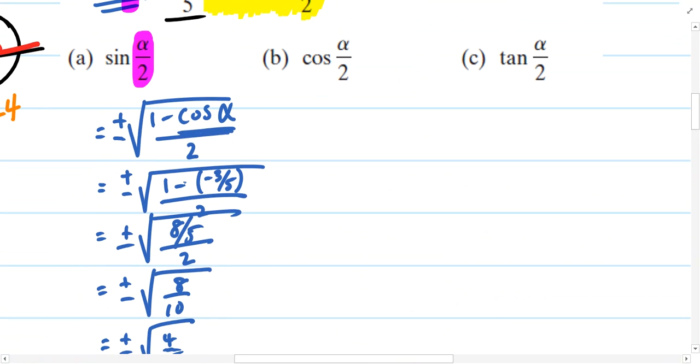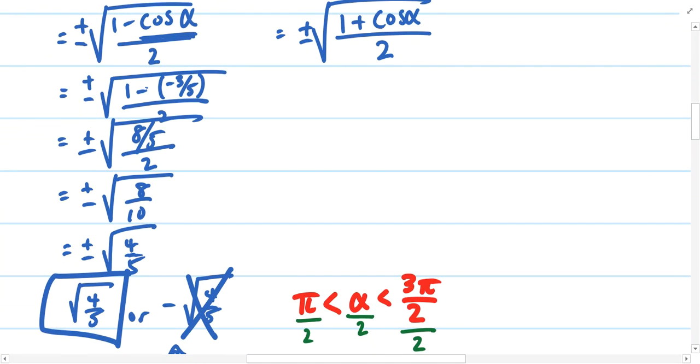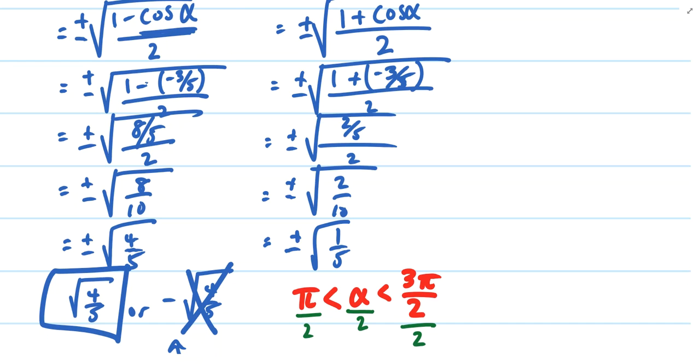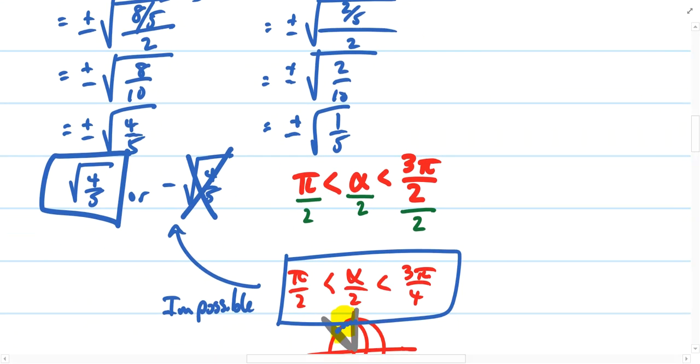Let's try another one, part b. Cosine of alpha divided by 2. Using the half-angle identity, we know that cosine of the angle divided by 2 is positive or negative square root of 1 plus cosine of alpha divided by 2. Only this time, 1 plus a negative 3 fifths is 2 fifths. That gives us 2 fifths, and when simplified, we're talking about 2 tenths or 1 fifth.